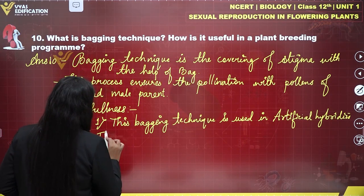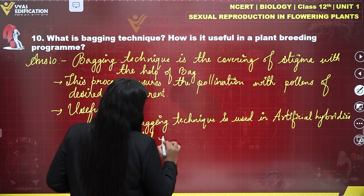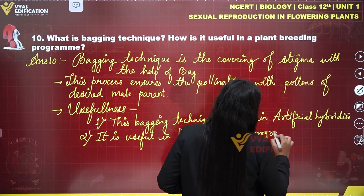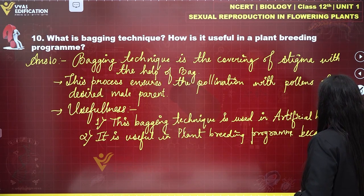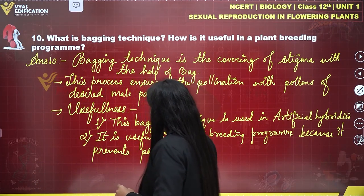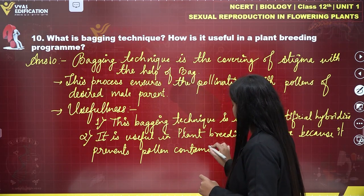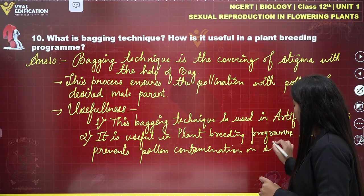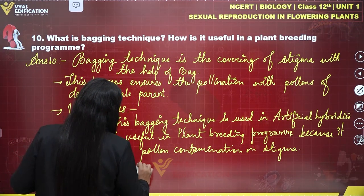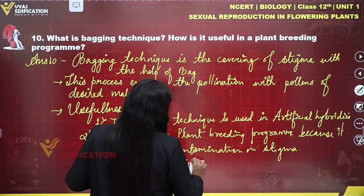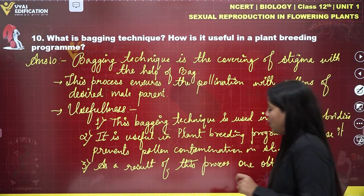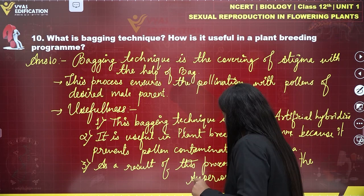Second, it is very useful in plant breeding programs. How is it useful in plant breeding programs? Because it prevents pollen contamination on stigma. And as a result of this process, one can obtain the superior species.